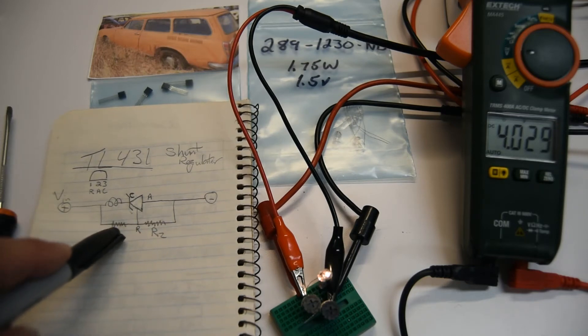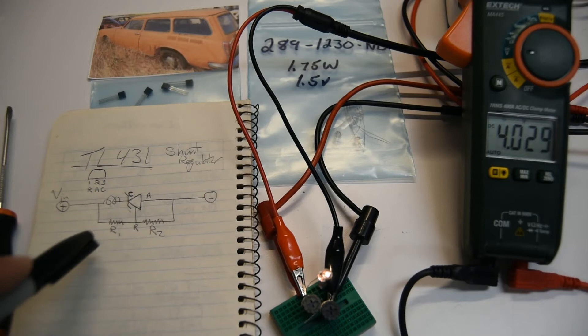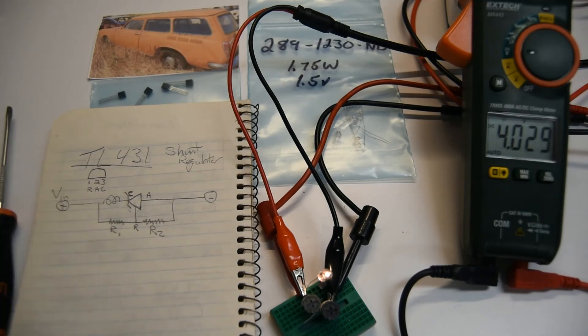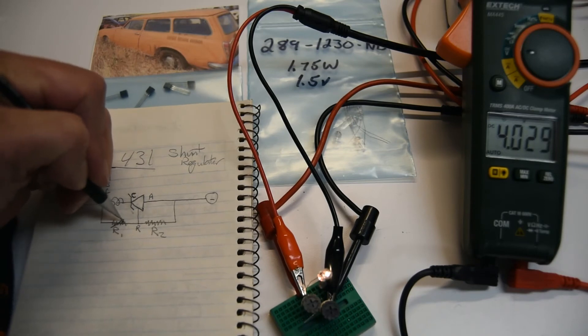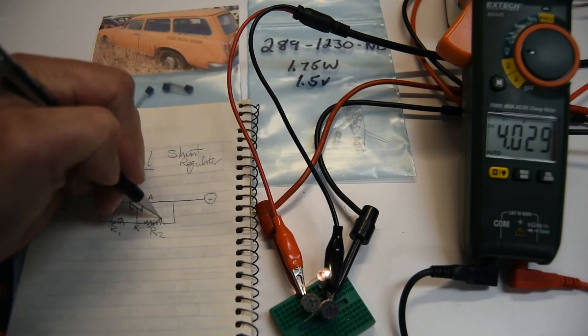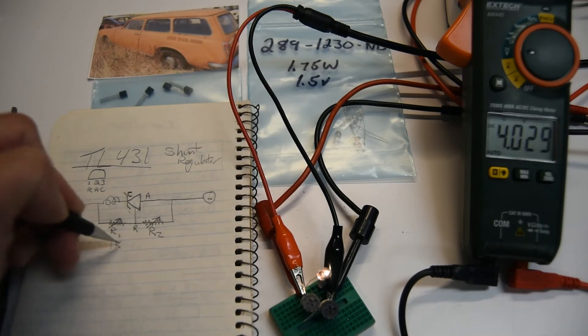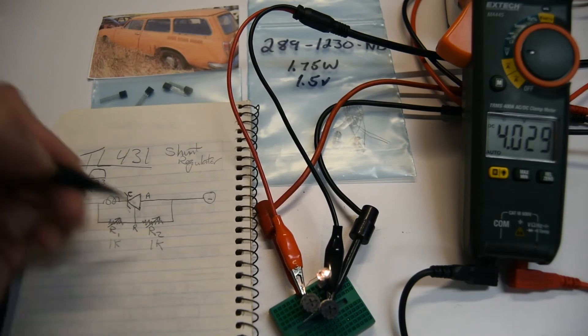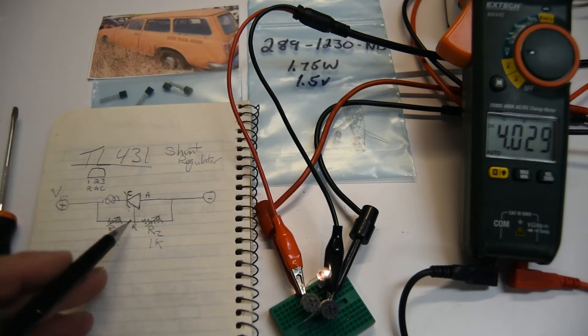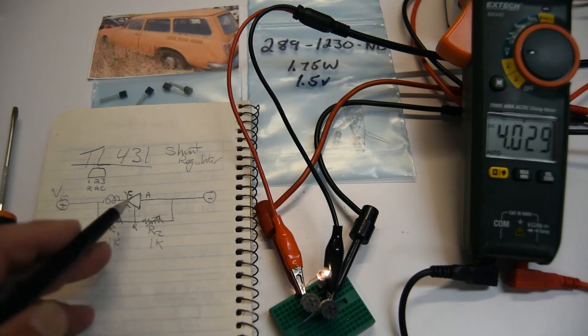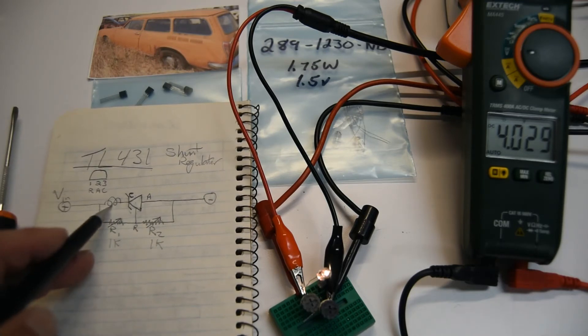Then I use two variable resistors, these happen to be 1k variable resistors, 1k and 1k, and I'm simply balancing the voltage that this guy turns on at, which lights up the light bulb.